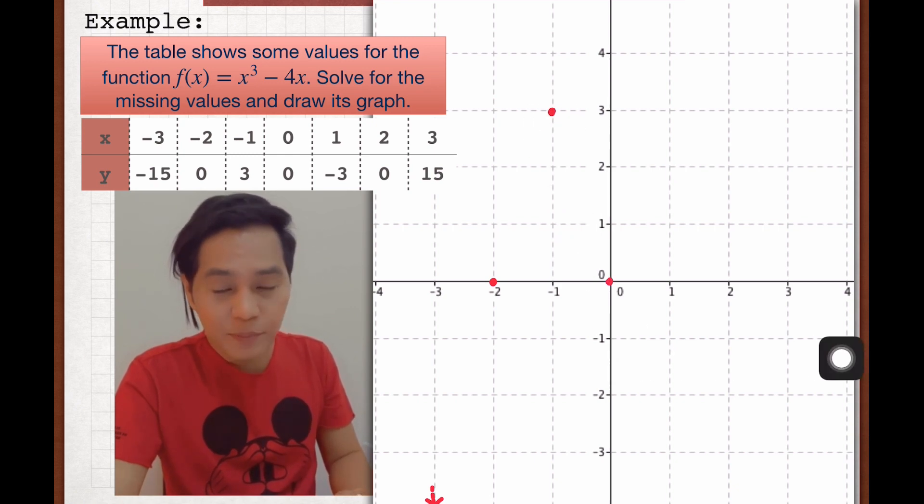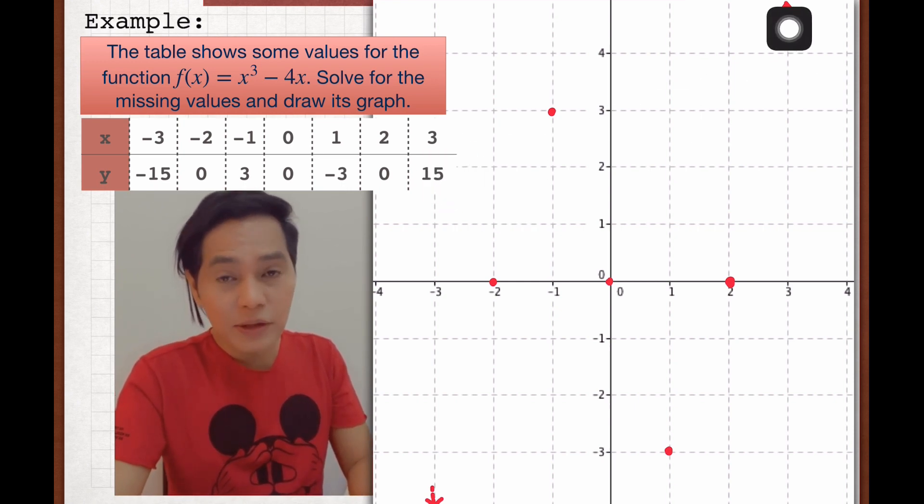Then 0, 0 is the point of origin. And then 1 and -3 in the fourth quadrant. 2, 0 in the positive x-axis. And 3, 15 on the first quadrant but it's on the upper, there up.